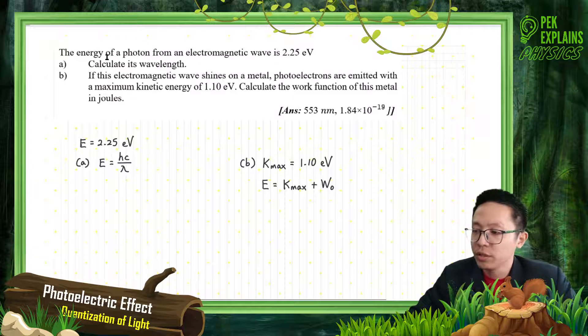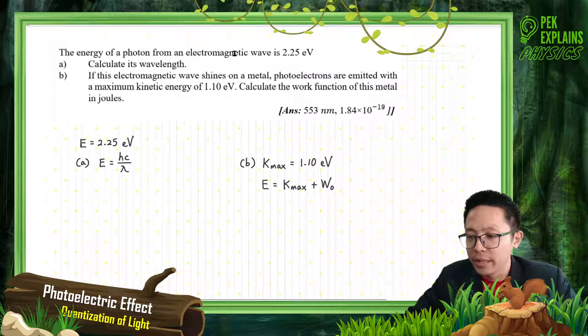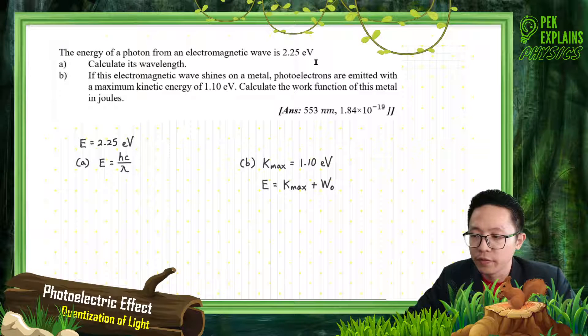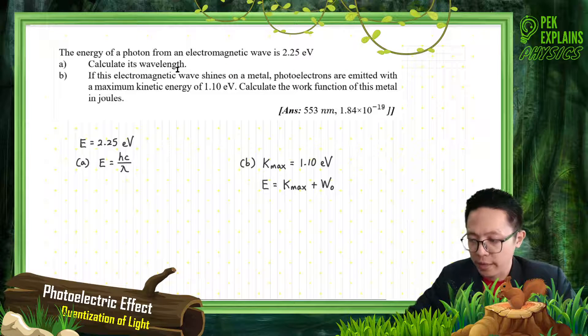The energy of a photon from an electromagnetic wave is 2.25 electron volt. Calculate its wavelength.